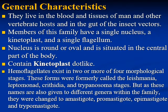General characteristics of haemoflagellates: they live in the blood and tissue of humans and other vertebrates, and in the gut of the insect vectors, so they require insect vectors for transmission. The members of this family have a single nucleus, a kinetoplast, and a single flagellum. The nucleus is round or oval and situated in the central part of the body. The kinetoplast is dot-like and functions in the movement of the flagella.